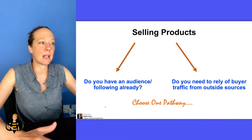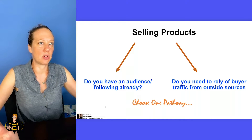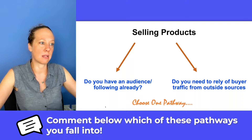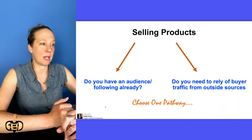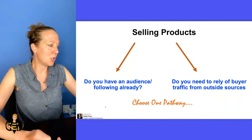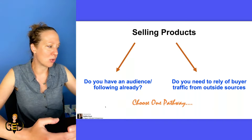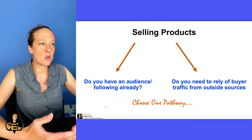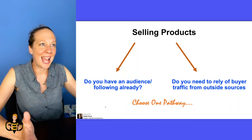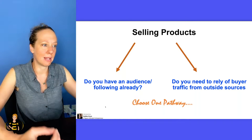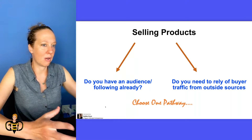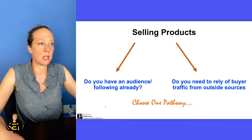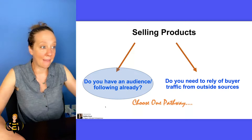When it comes to selling your content or selling your products, you really have to choose one pathway. How do you choose that pathway to determine where you're going to sell your products? We answer this question: do you have an audience or a following already, and do you rely on — or need to rely on — buyer traffic from outside sources? If you're just starting out or haven't built much of a following yet, you'll veer towards outside sources. If you already have an audience, specifically in the form of an email list, that's going to steer you in another path.